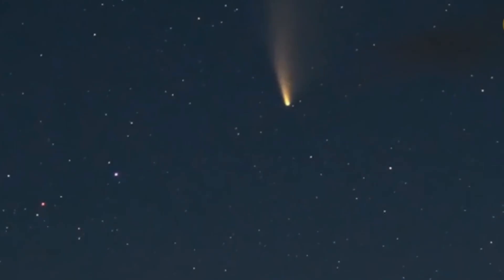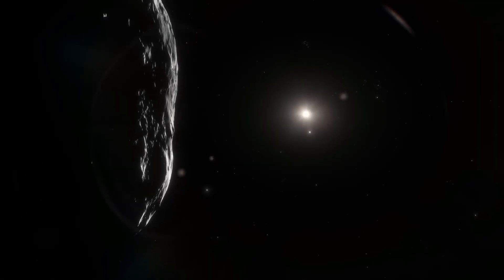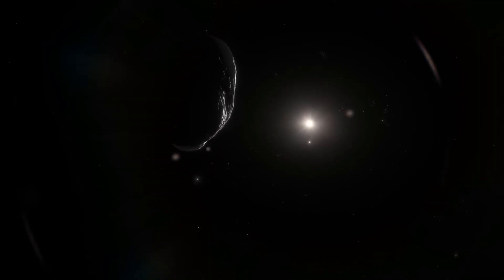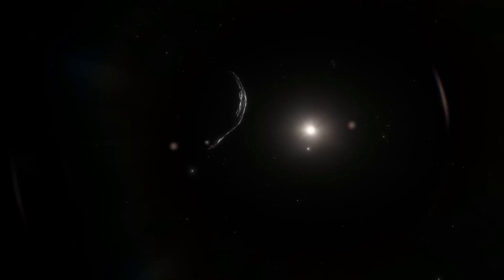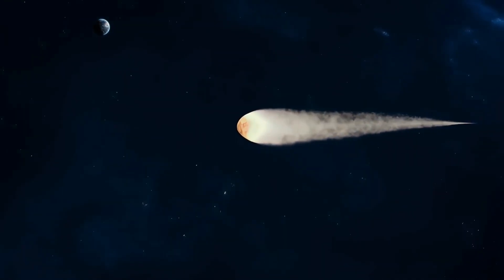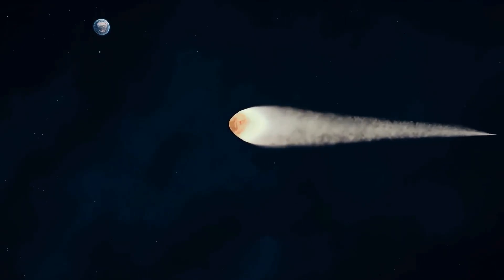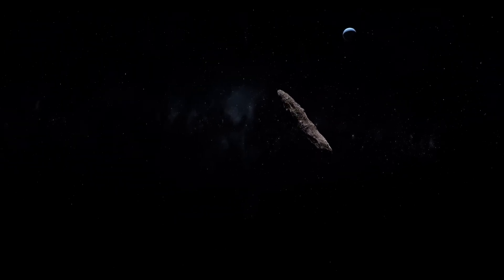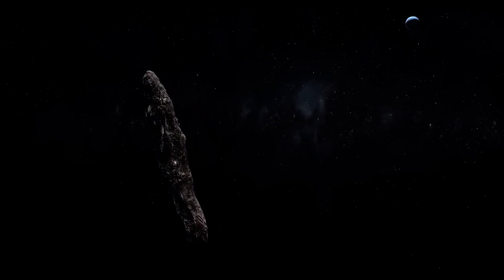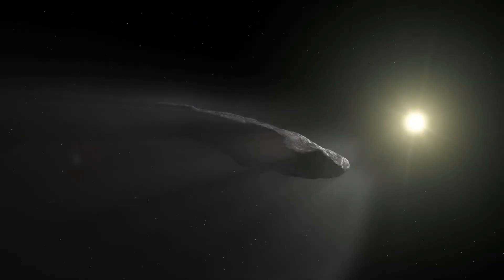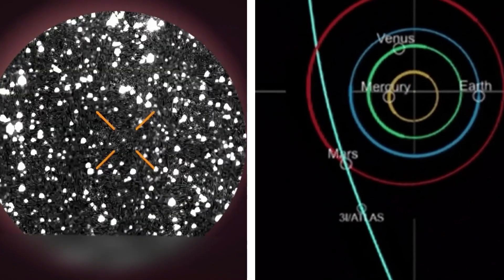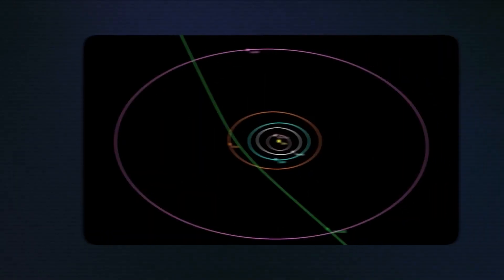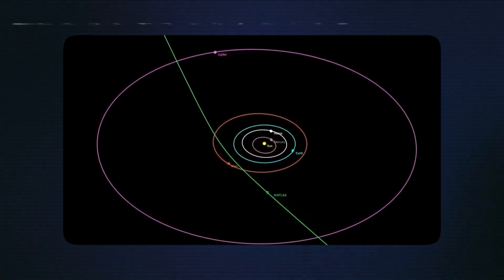Now addressing the question many are probably asking, will we be able to see 3i Atlas? The answer depends on when and where one is looking. During its closest approach to Earth in December 2025, 3i Atlas will be about 105 million miles away. That's still too far for naked eye visibility. Observers would need at least a moderate-sized telescope to spot it. For comparison, comet Hale-Bopp was visible to the naked eye because it came within about 120 million miles of Earth and had much more active dust and gas production that created a bright, visible tail.